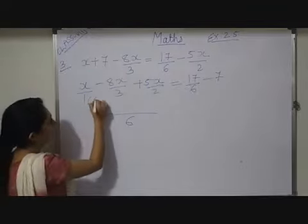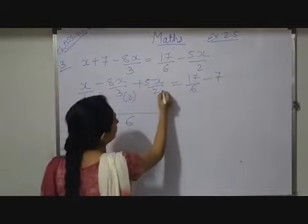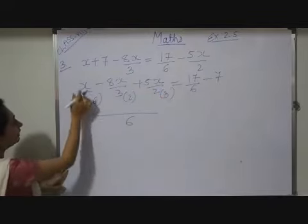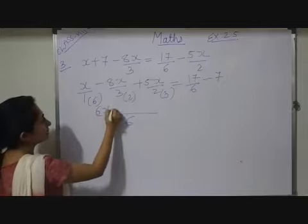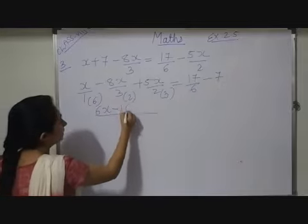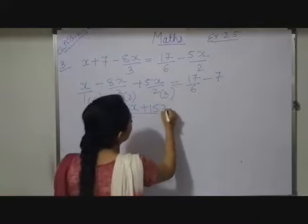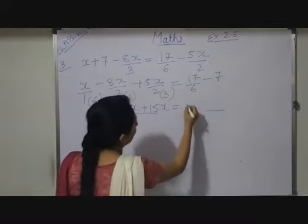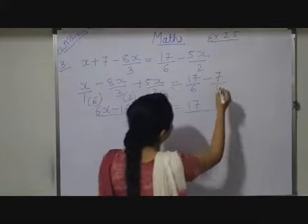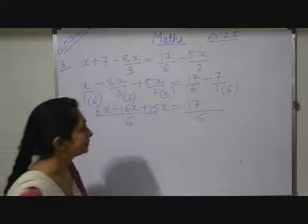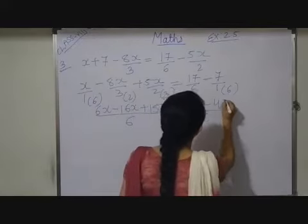So this number you have to multiply by 6. This one by 2. This one by 3. So when you take LCM you will get 6x minus 8 2s are 16x plus 5 3s are 15x which is equals to 17. LCM I am taking 6. So this number I have to multiply by 6. So 7 6 are 42. Now observe.